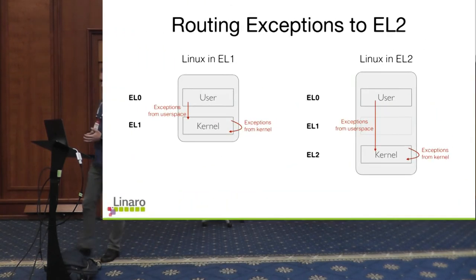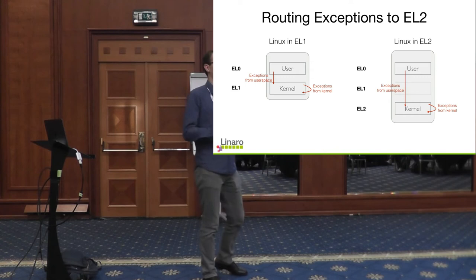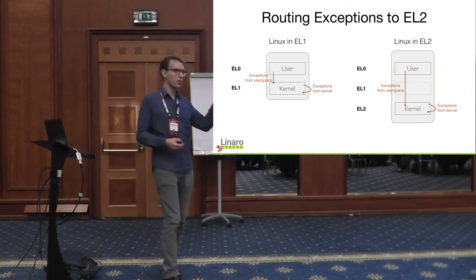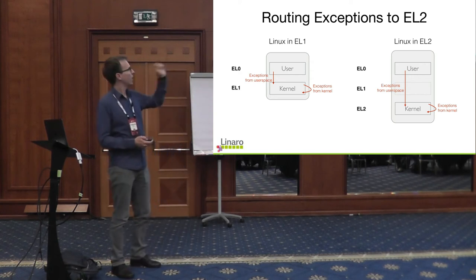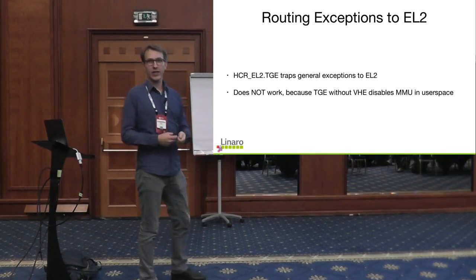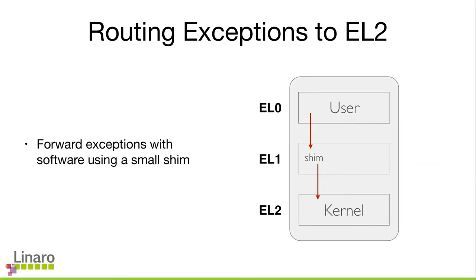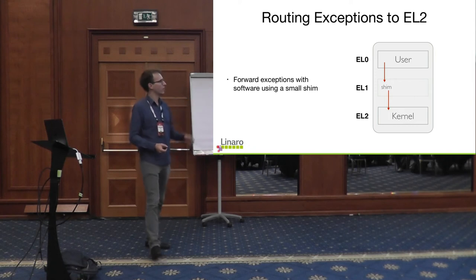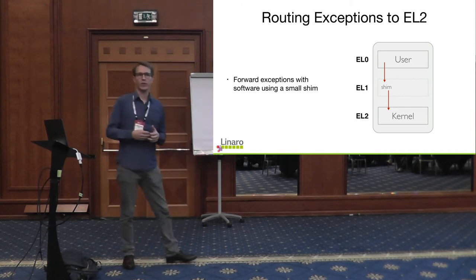The third challenge was running user space on top of a kernel in EL2. We generally want exceptions to go to the kernel no matter where it runs. The hardware routes many exceptions to EL1, and using the TGE bit disables virtual memory in user space. So we install a small shim — one page of code in EL1 that forwards exceptions to EL2 in software — and modify the EL2 kernel exception entry path to recognize that exceptions apparently from EL1 actually came from EL0.